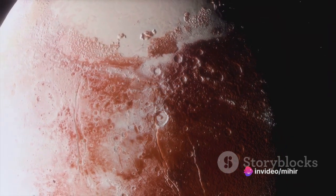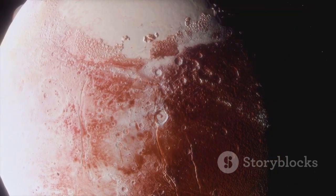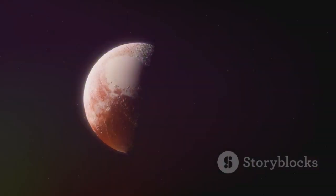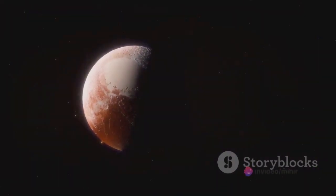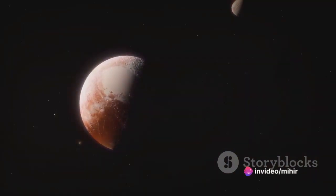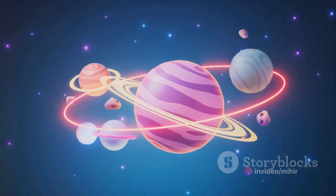Beyond this, we've explored the frontier of our Solar System, the Kuiper Belt, home to Pluto and countless other icy bodies, remnants from the formation of our Solar System. And finally, the Oort Cloud, a distant spherical shell of icy objects believed to be the source of our long period comets.